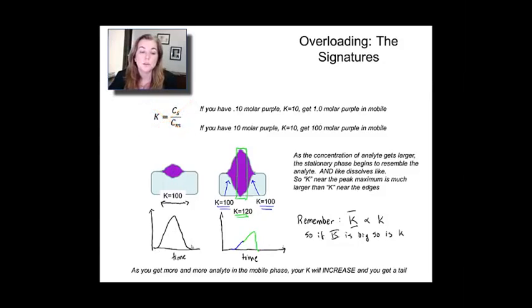But the problem is that here's a case where you don't have a lot of analyte present in the mobile phase, and so you get a nice uniform distribution out, because the partition coefficients from the tailing end and the leading end of the peak are all identical.